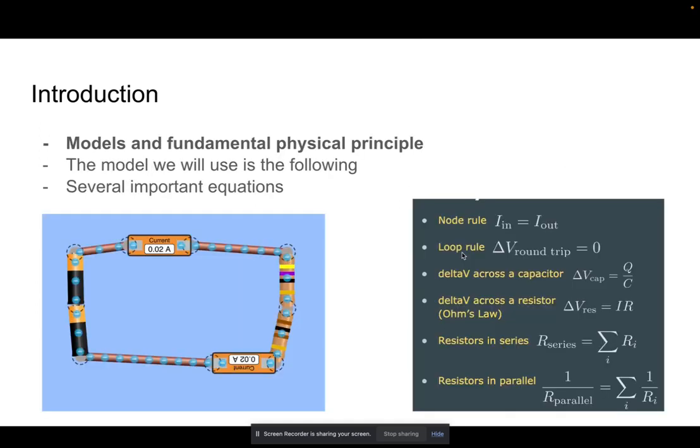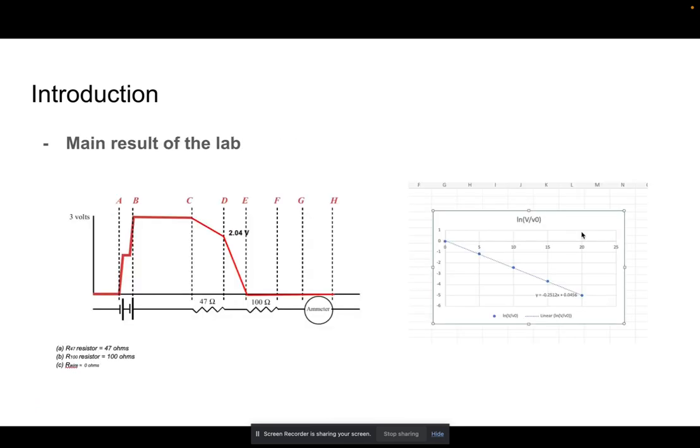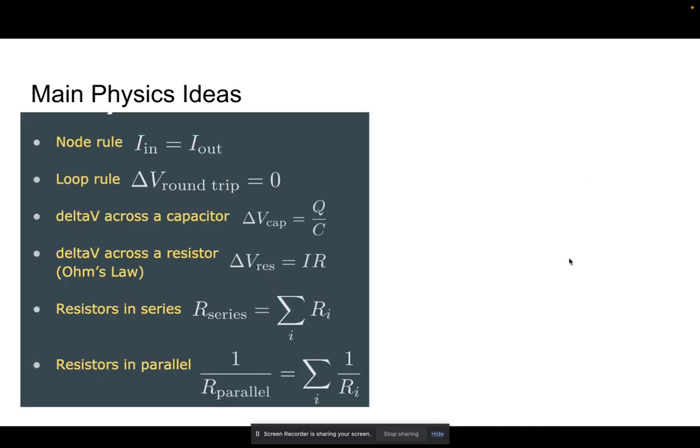For models and fundamental principles, here we can see a circuit, an example of the circuit that we'll use through the simulation, and then here are some basic concepts that we're going to have to know. As a main result of the lab, we were able to calculate the potential difference loss over the entire circuit, and then we were able to figure out a curve of the linearization of the voltage on the right here for the RC circuit.